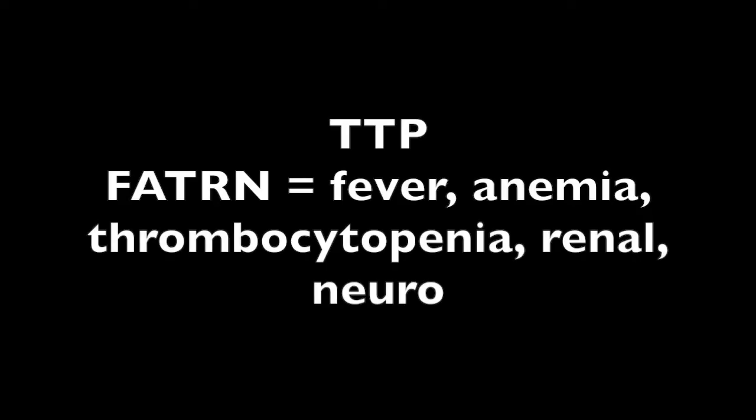TTP also causes fever, renal problems, and encephalopathy — use the mnemonic FAT RN: Fever, Anemia, Thrombocytopenia, Renal problems, Neural problems. Hemolytic uremic syndrome (HUS) is caused by EHEC (enterohemorrhagic E. coli) from undercooked burgers, causing microangiopathic hemolytic anemia — anemia, thrombocytopenia, and renal problems. Treat HUS with dialysis.